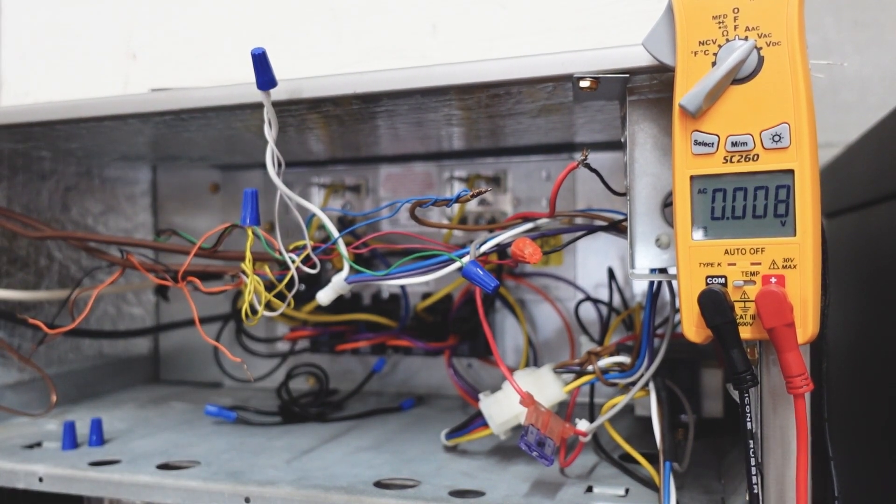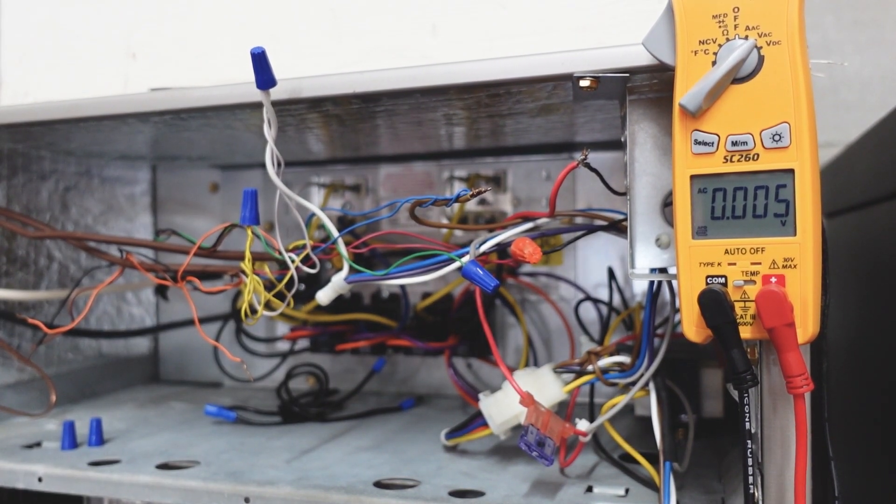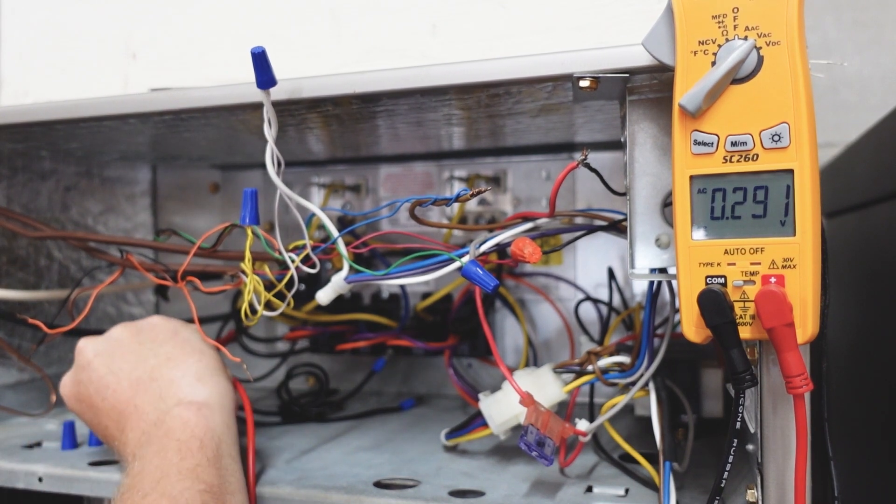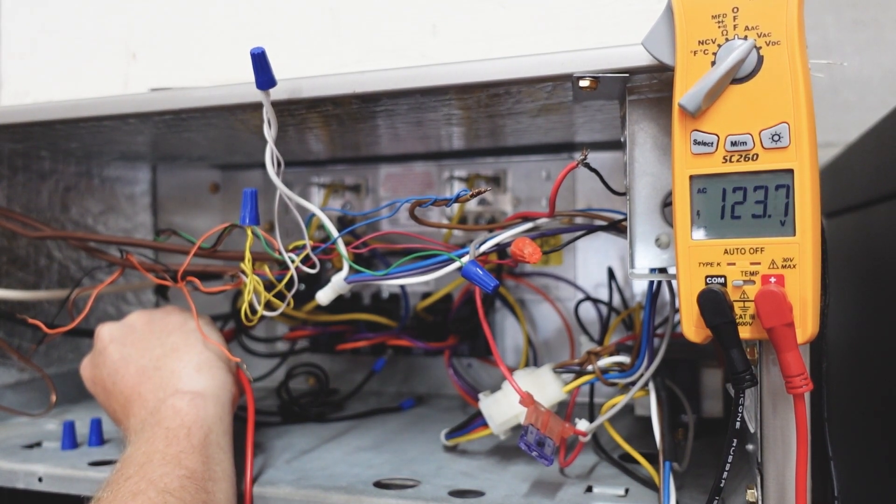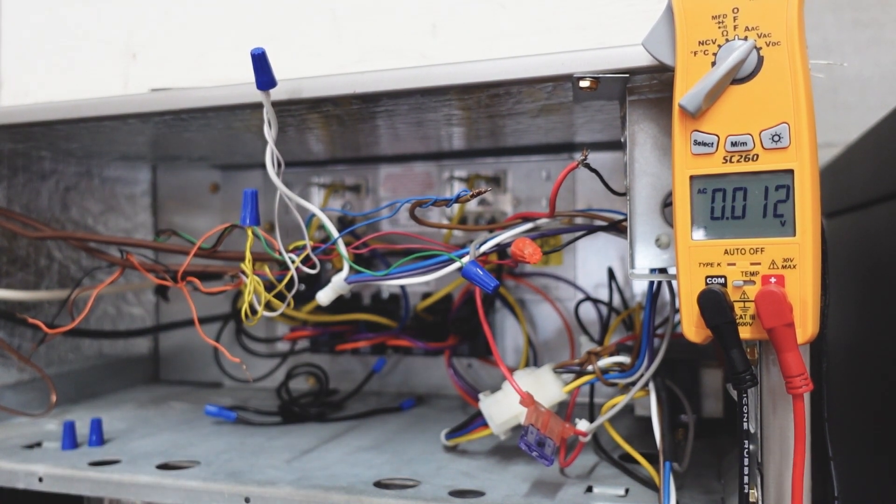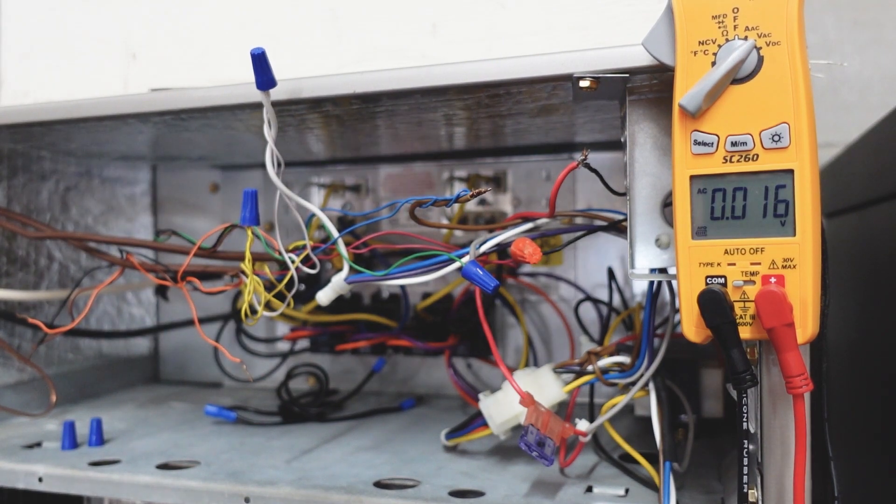We have 213 because this is a 208 building, meaning we're using two legs of three phase. It kind of throws people off sometimes because you'll actually notice that we have 120 from each leg to ground. And together that doesn't add up to the 212 that we're actually seeing, but that's because it's a three phase power supply.